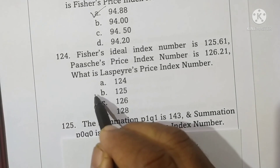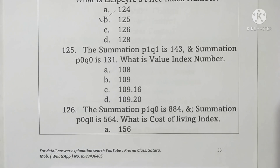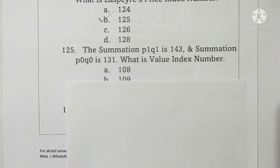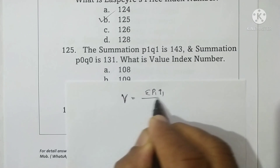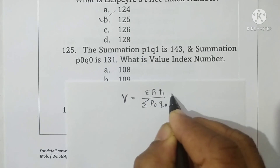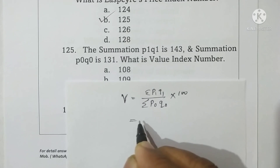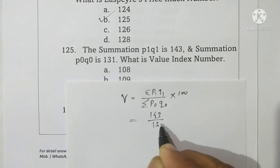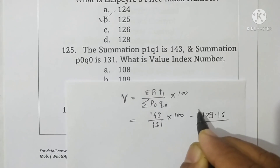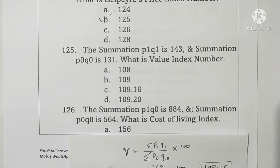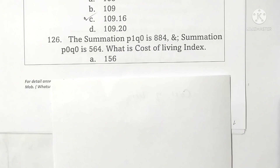Question 125: summation P1Q1 is 143 and summation P0Q0 is 131. What is the value index number? The value index number formula is summation P1Q1 divided by summation P0Q0, into 100. Putting the values: 143 divided by 131 into 100 gives 109.16. Students may use the calculator. Option C is correct.